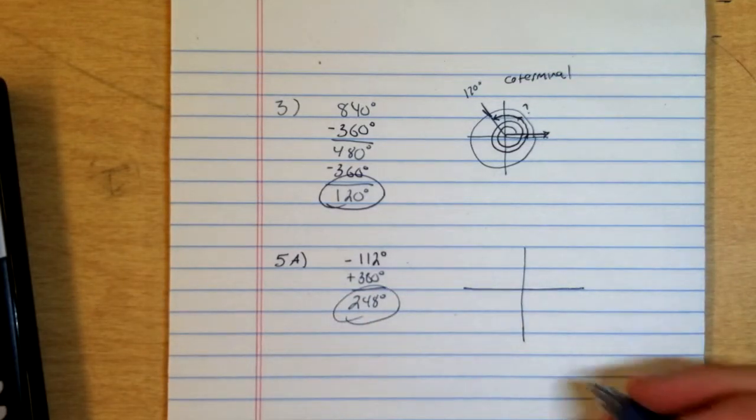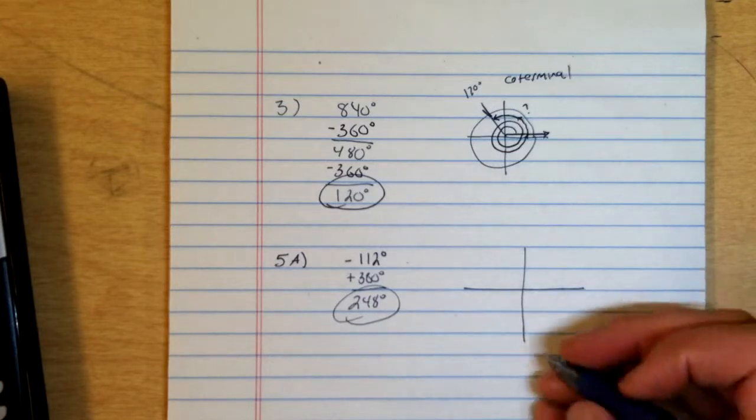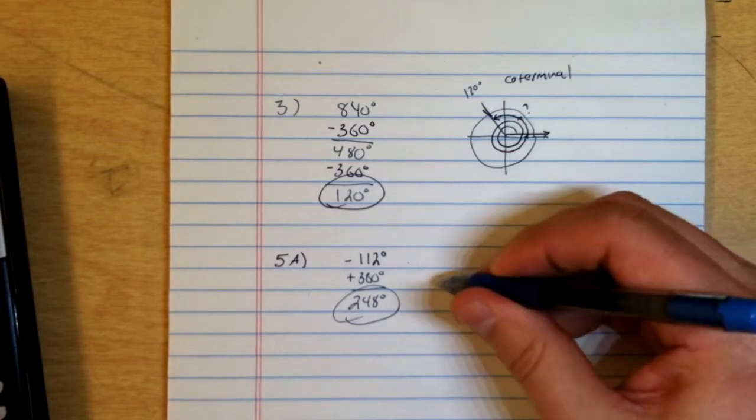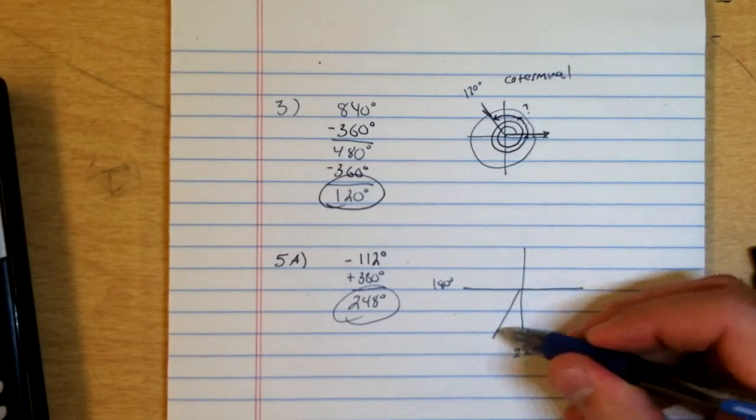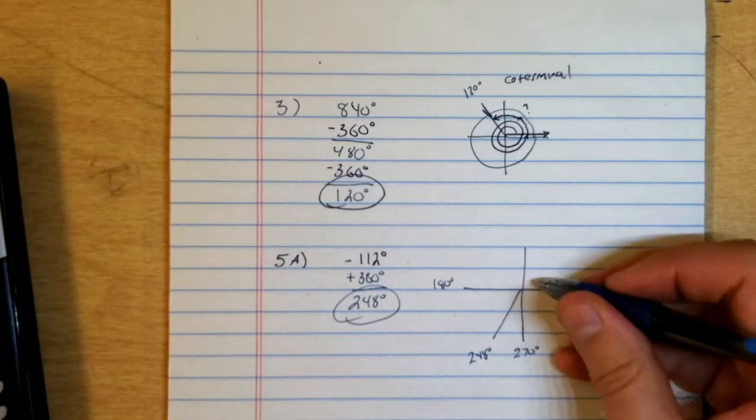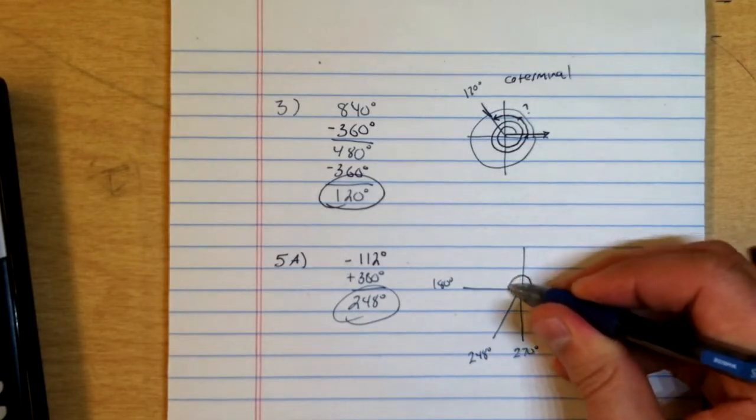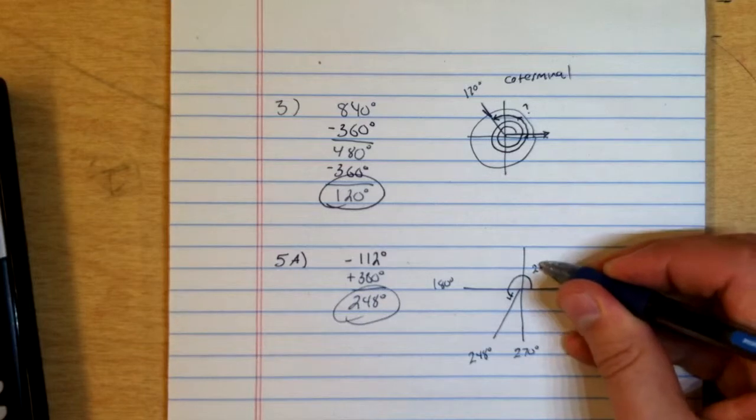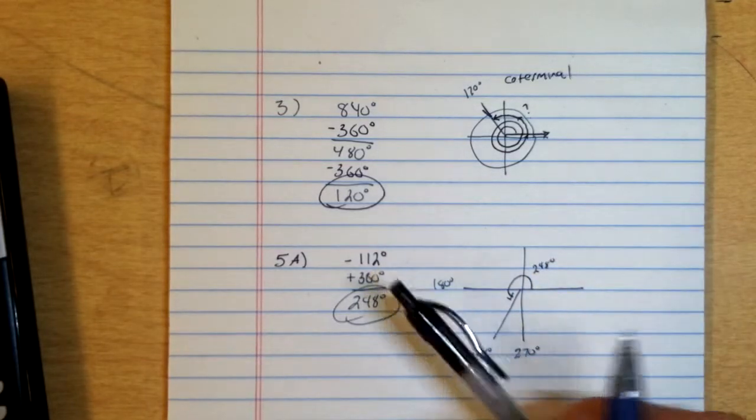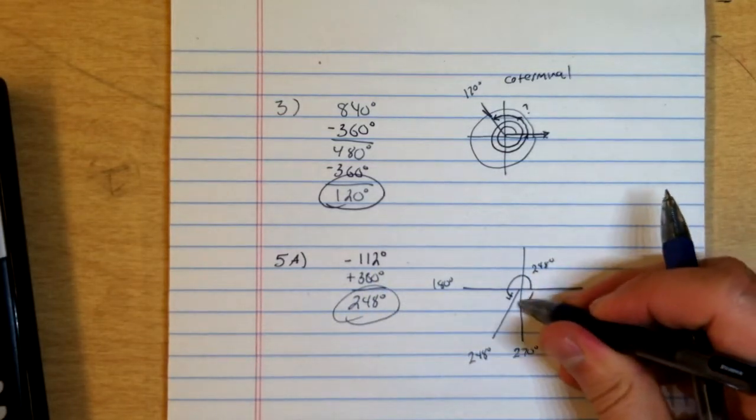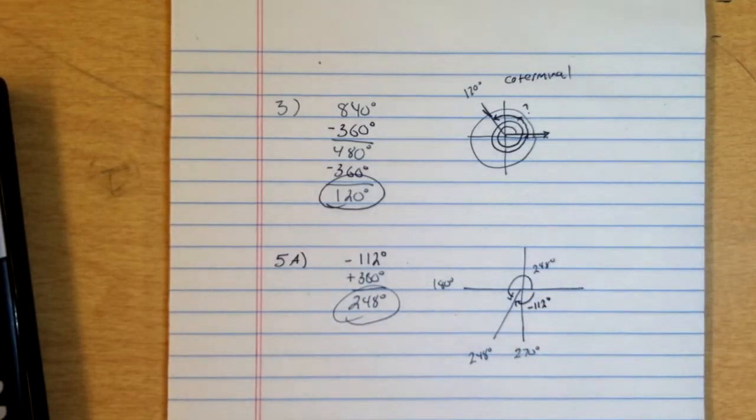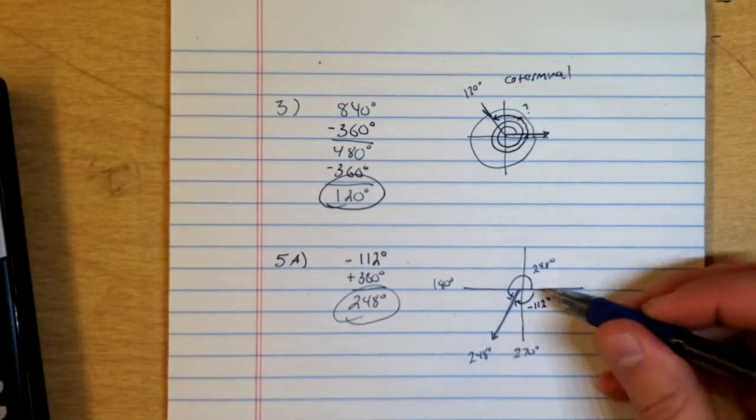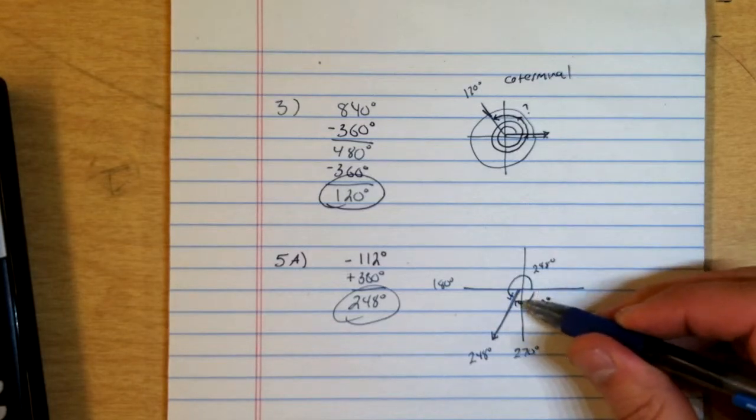But what it means that the angle is coterminal is that this 248 degree angle, now let's see, this is 270 degrees right here, this is 180 degrees. So 248 degrees, maybe it's in here somewhere, 248 degrees. So if I measure that 248 degrees, that means if I go this way, it's 248 degrees. The negative 112 degrees means if I go this way 112 degrees, then that's negative 112 degrees because I'm going the wrong way by going clockwise instead of counterclockwise. But either way, I end up in the same place. So 248 degrees and negative 112 degrees, they are coterminal angles.